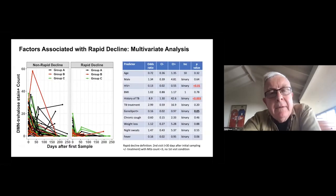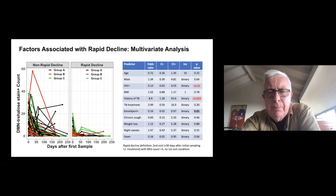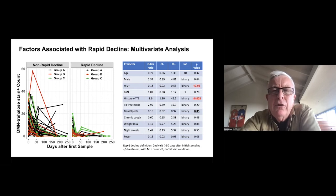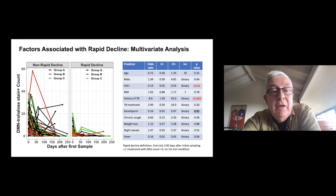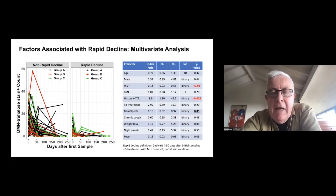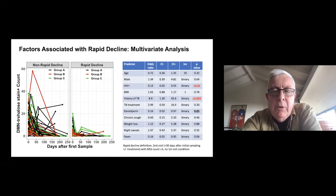If we somewhat arbitrarily divide this group into non-rapid decliners and rapid decliners — based on whether they managed to virtually clear their organisms down to less than three organisms by two weeks — in multivariate analysis two parameters stand out. The first is HIV, which is six-fold higher in the non-rapid decliners, interfering with treatment or immune clearance over time. The other is previous history of TB, which is associated with an almost nine-fold increase amongst the rapid decliners. There's obviously a major immunological import to this — impaired immunology from HIV affects it one way, but previous TB treatment affects it the other.